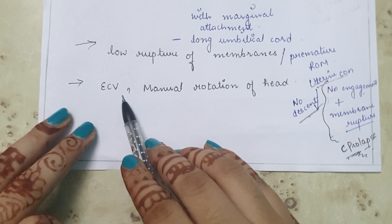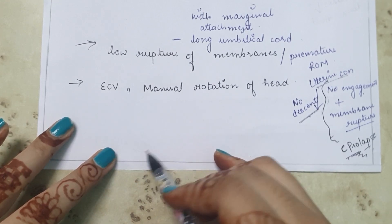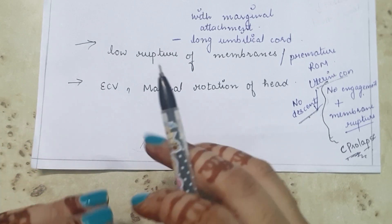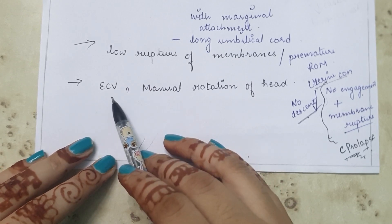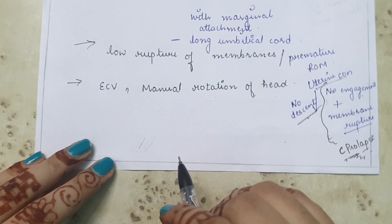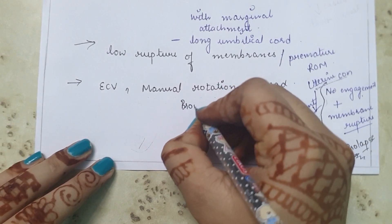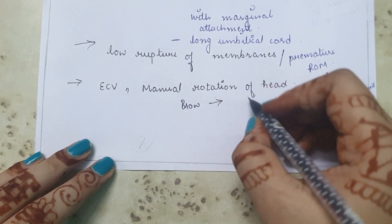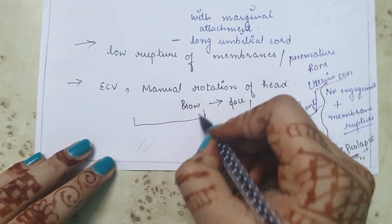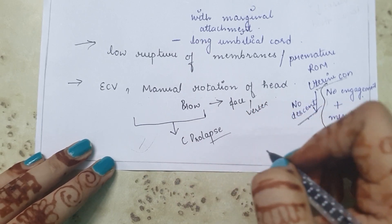Next is ECV — external cephalic version — which is done to correct abnormal lies such as transverse lie or breech presentation, converting them to cephalic presentation. Manual rotation of the head is done to correct the presenting part, for example converting brow presentation to face or vertex presentation using hands. These procedures can also lead to cord prolapse. That is all about the causes of cord prolapse.